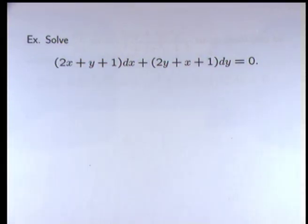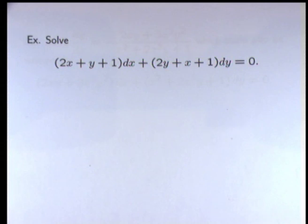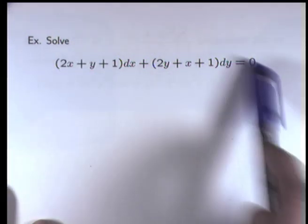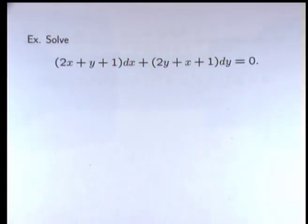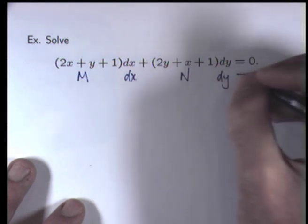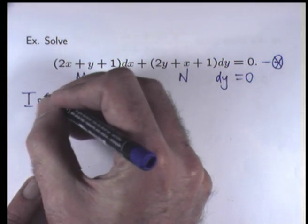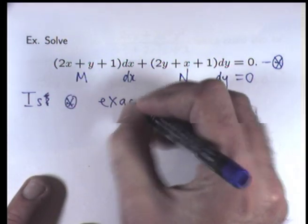Let's do a problem and see how it all works. Solve the following ordinary differential equation. The first thing you'll notice is that the dy/dx is split up into a so-called differential form, which is a common way of writing exact equations. Here M would be this first function and N would be this second function. The first thing we need to do is actually test the equation to see if it really is exact. The important question is: is this equation exact?